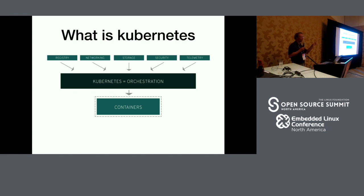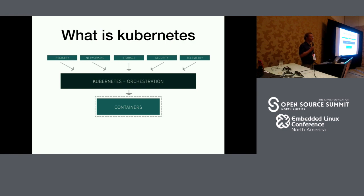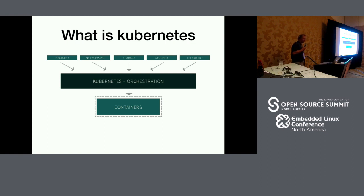Since we now have lots of containers or Linux processes running around, we need something to orchestrate them — and that's what we call Kubernetes, sometimes abbreviated K8s. Anyone know why K8s is an abbreviation for Kubernetes? Because the word Kubernetes has eight letters — K, eight letters, S. Just a fun fact.